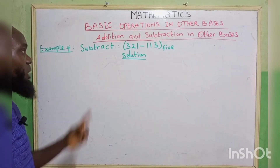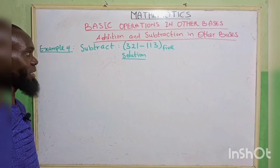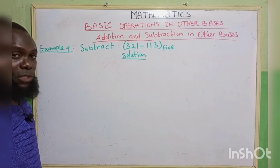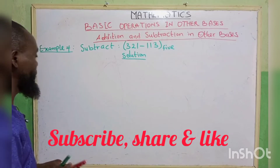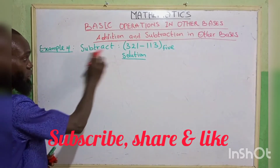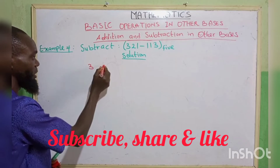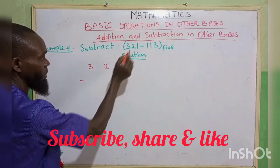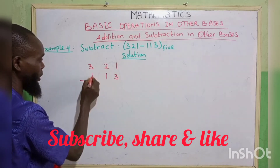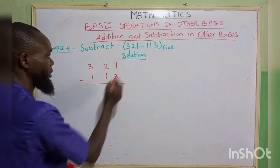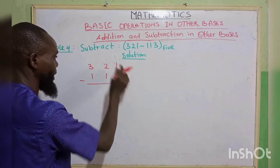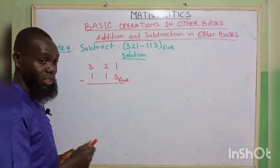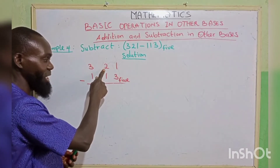Example 4: subtract (3121 minus 113) all in base 5. We write 3121 minus 0113, all in base 5. Starting from the right: 1 minus 3 is impossible, since 3 cannot be subtracted from 1. We borrow 1 from the next column.